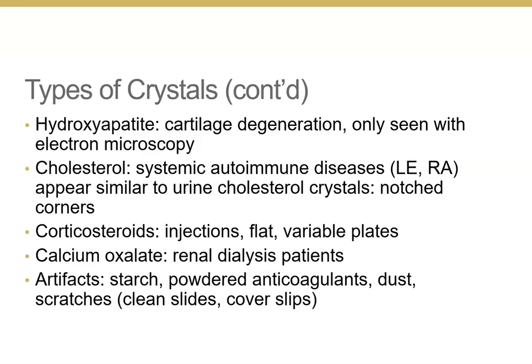Cholesterol crystals, which look similar to those in urine with notched corners, may be found in autoimmune disorders and will polarize. Corticosteroid crystals appear as flat irregular plates, usually from steroid injections given to control joint pain. Calcium oxalate crystals resemble those in urine and may be found in renal dialysis patients. Artifacts such as starch, dust, and powdered anticoagulants must also be recognized.